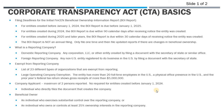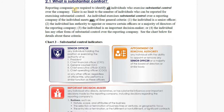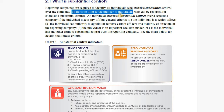It's only newly formed entities after January 1, 2024 that must provide company applicant information. A beneficial owner is an individual who exercises substantial control over the company, or an individual who owns or controls at least 25% ownership in the reporting entity. There is no limit to the number of individuals who could be reported for exercising substantial control.